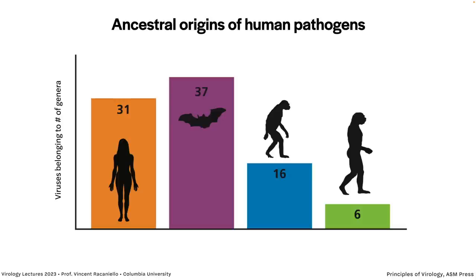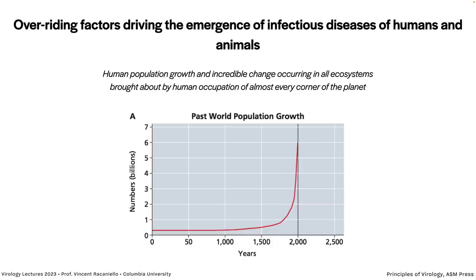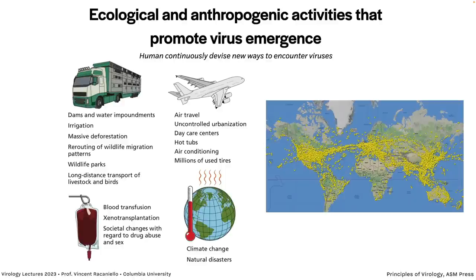Our viruses came from different animals — not just non-human animals but also humans and hominids. What's driving this spillover is population growth. When we went from hunter-gatherers to living in bigger groups, we started to get more infections. Population growth is astounding — over the past 2,000 years we are occupying every corner of the planet, invading areas full of wildlife and getting their viruses. We're not just invading ecosystems but changing them. Many activities promote virus emergence: air travel can bring viruses all over the place.